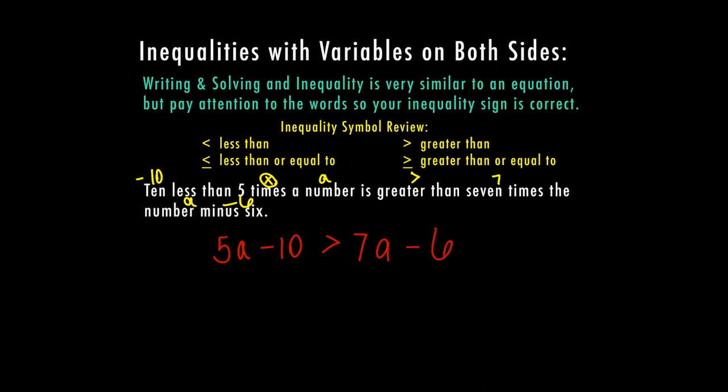Now that I've written out my inequality, it looks like solving an equation with a variable on both sides — the only difference is I have this inequality symbol. In order for the inequality symbol to be pointing in the direction you want to graph it, we'd like for our variables to be on the left side. So I'm going to always move my constants to the right and my variables to the left. That means I'm going to first get rid of this minus 10 and move it to the right side by adding 10 to both sides.